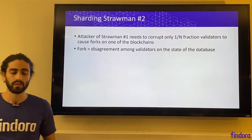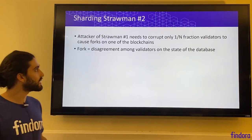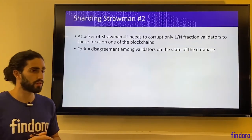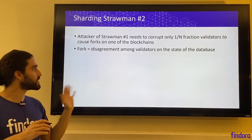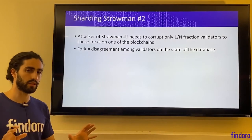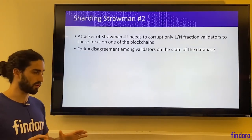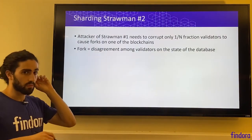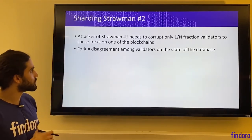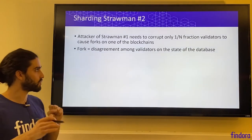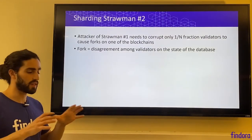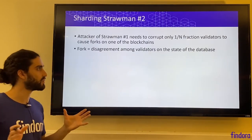One problem with straw man number one is that an attacker would only need to corrupt one-over-n fraction of the validators in order to cause forks on one of the blockchains. Forks are the technical term for disagreement among validators on the state of the database. If you have multiple validators split into n different groups, the attacker of straw man one only needs to corrupt the validators who are in charge of shard number one in order to cause confusion in the network over what is the state of shard number one.